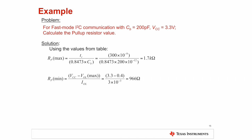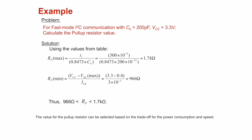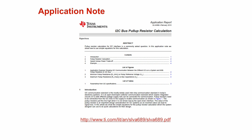Similarly, the RP min value is derived with the VCC, VOL, and IOL values. The value for the pull-up resistor can be selected based on the trade-off for power consumption and speed. For more detailed information on these calculations, you can look at the app note at ti.com.